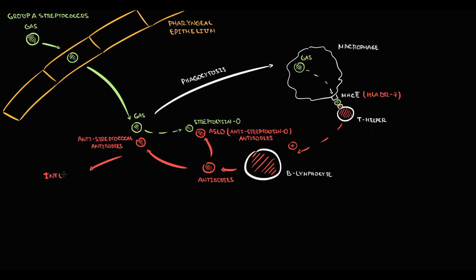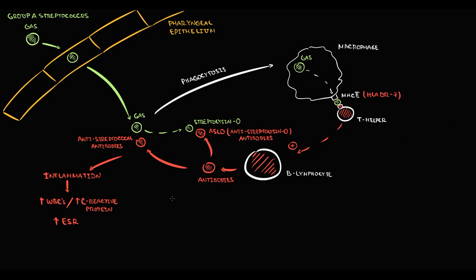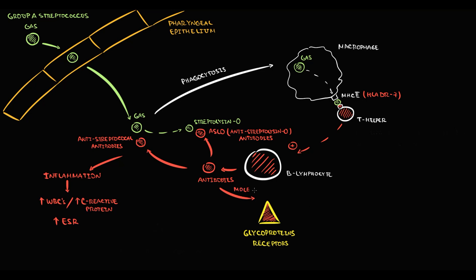Massive production of antibodies causes an inflammatory state. With inflammation, white blood cells increase, C-reactive protein increases, and erythrocyte sedimentation rate increases. But the most significant problem is that there is a chance these antibodies will not only bind to Streptococcus, but also to glycoproteins or receptors on our own tissues. The phenomenon where antibodies mistakenly recognize our normal receptors as something related to Streptococcus is called molecular mimicry — glycoproteins or receptors can look exactly like Streptococcus to these antibodies.